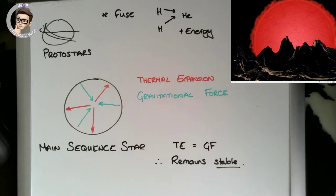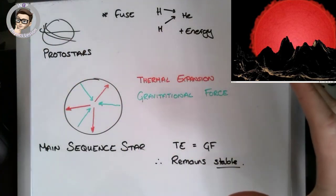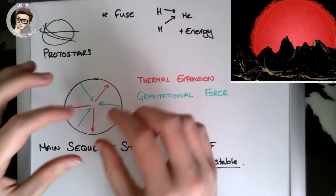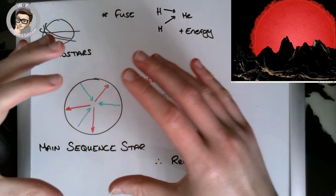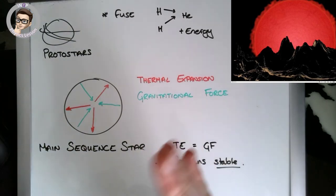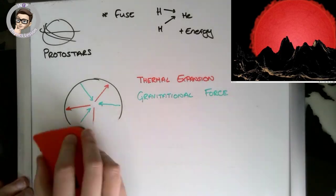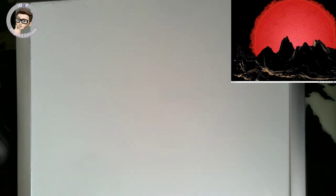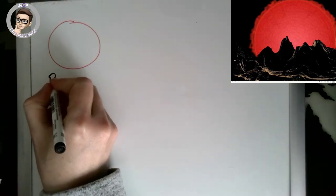When our star reaches the end of its life, it becomes a red giant. The star expands from quite small to much bigger because the thermal expansion is greater than the gravitational force. It expands until those forces become equal again, and once they're equal we're in the red giant phase. The red giant will happen to our star in the future and will probably engulf the earth — it will be a very big star.